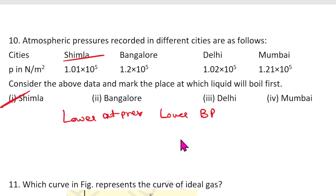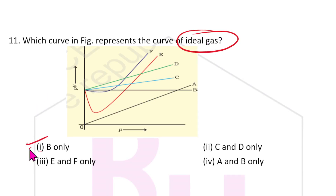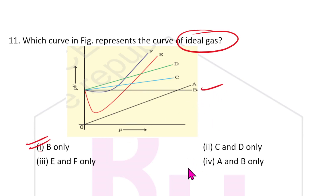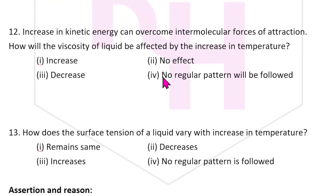Question 11: Which curve represents an ideal gas? For an ideal gas, the pV versus p plot is a straight line parallel to the x-axis. The answer is option B.